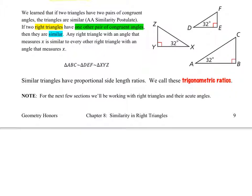Earlier this year, we learned that if two triangles have two pairs of congruent angles, then the triangles are similar by the AA, or angle-angle similarity postulate. When we're talking about right triangles, they all share a right angle — one 90-degree angle. So if they have one additional pair of congruent angles, then by the AA similarity postulate they are going to be similar. In this diagram, you have three right triangles — triangle ABC, triangle DEF, and triangle XYZ — and they all have another angle that measures 32 degrees.